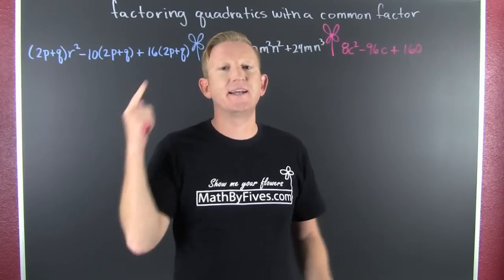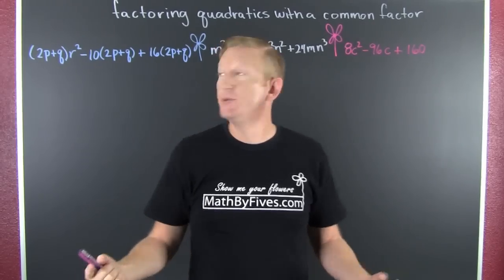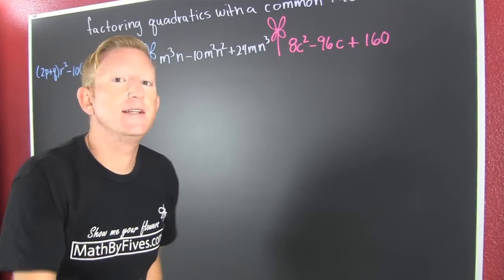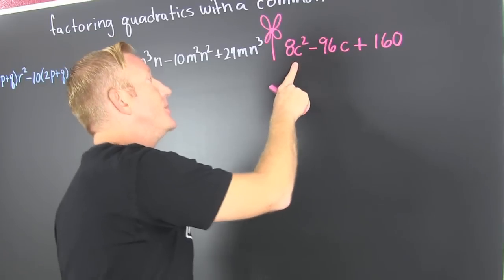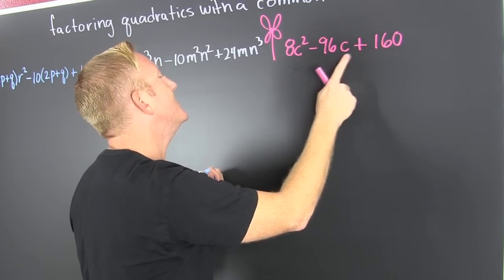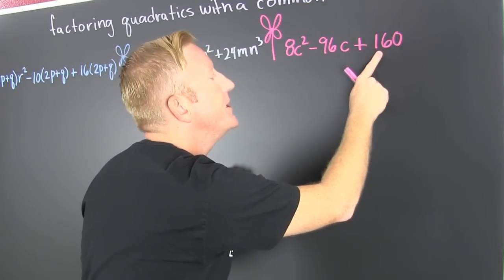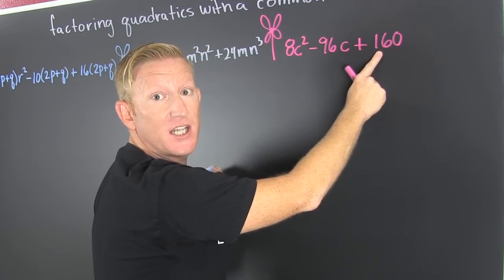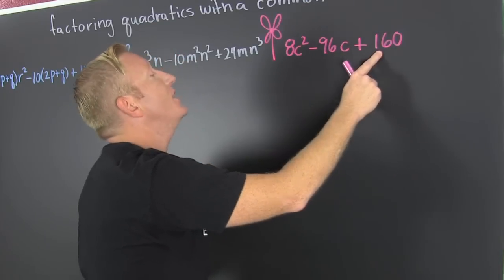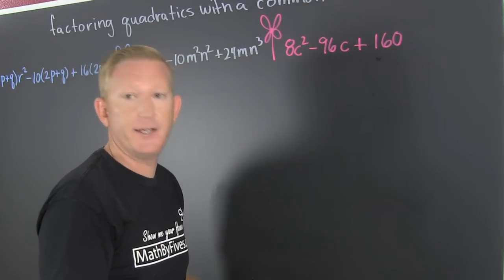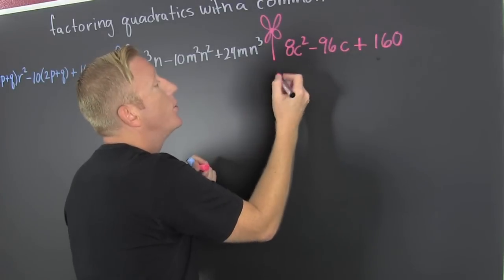We're factoring quadratics that have a common factor. Should we start hard? No, let's work up to it. Let's do this first example first. I'm looking at 8c² - 96c + 160. Wow, big numbers. We can factor out a common factor and make the numbers smaller, nicer, faster.